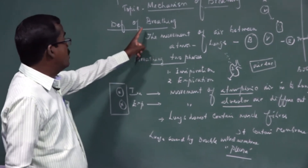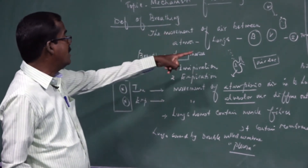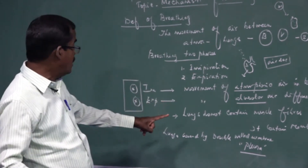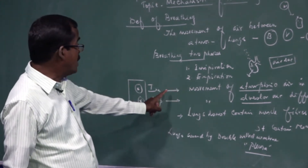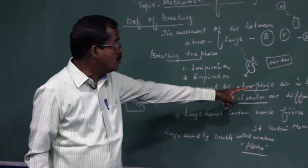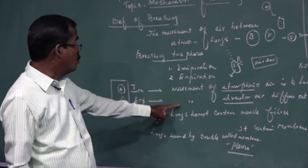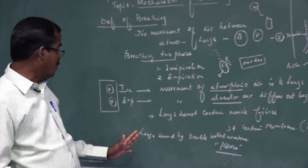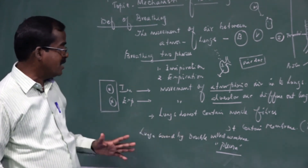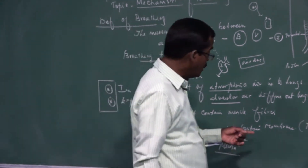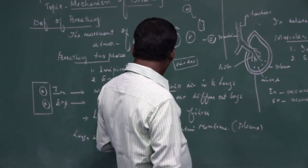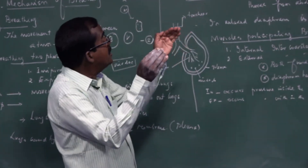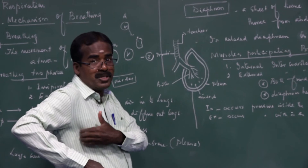To recap: the definition of breathing, the two phases of breathing, what is inspiration, what is expiration, and that lungs do not contain muscle fiber but are covered by a double-walled membrane called pleura. Lungs expand and contract by movement of ribs and diaphragm.